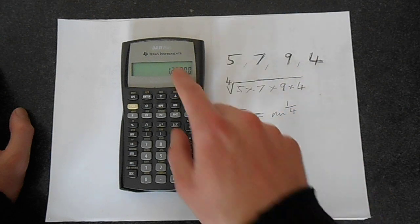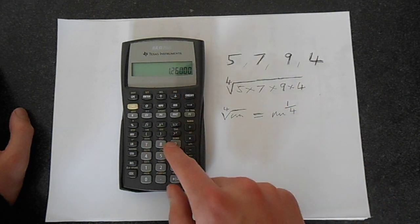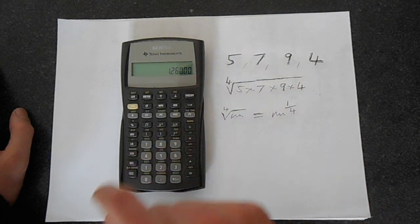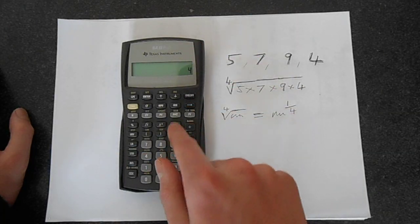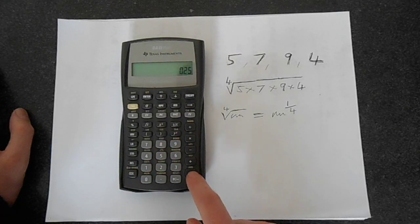Now we want to raise this to the power of a quarter, so we're going to use this y^x button. Then we're going to put in 4, and we want 1 over 4, so we use the 1 over x button, and then just press equals.